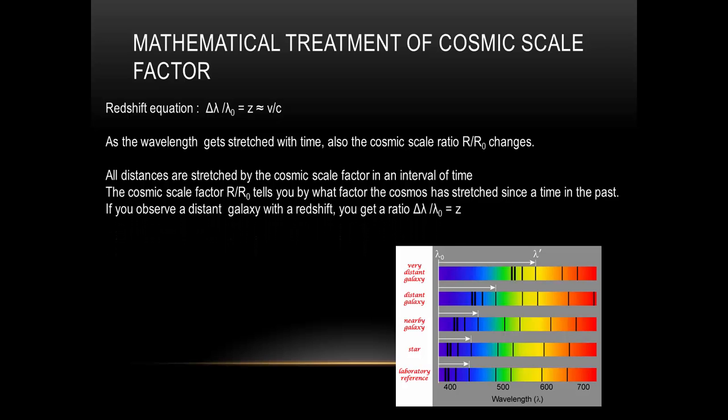So if you observe a distant galaxy with a certain redshift, you basically get what this redshift is: delta lambda divided by the original wavelength, which will be Z, that will give you the redshift. If the original emission of this radiation was at wavelength lambda nought,